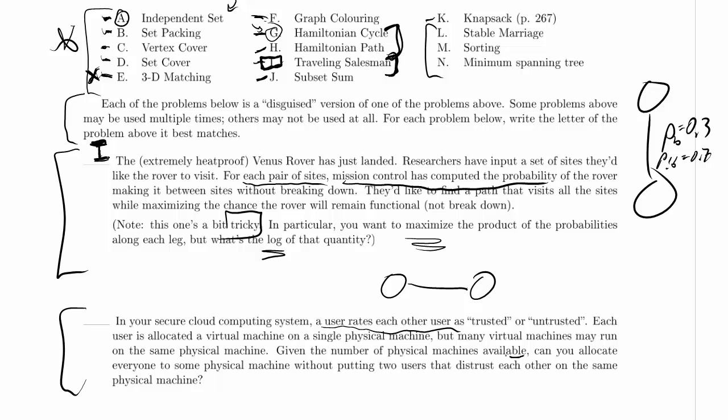Given the number of physical machines available, underline that. So there is a number here, right? And maybe this is one of our thresholds. Can we allocate everyone to some physical machine without putting two users that distrust each other on the same physical machine?